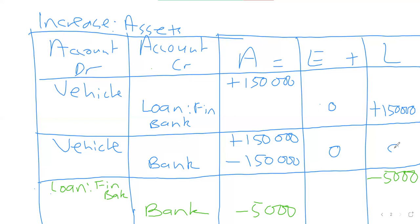Now for buying the car for cash: vehicles is a plus 150,000 because the vehicle is coming into the business, but money is going out to buy that car. Since bank is an asset, it will be a minus on the asset column as well. Notice there's no effect on equity and no effect on liabilities — the effect is only on the asset side.